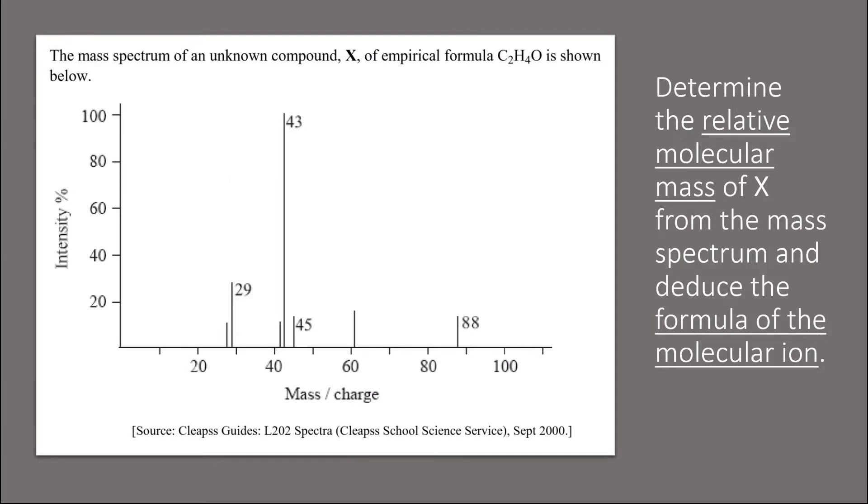This question is taken from an IB exam paper. We cannot determine the molecular structure of a compound using only its mass spectrum. A mass spectrum can help you identify parts of the molecule and the molecular formula if the empirical formula is known.